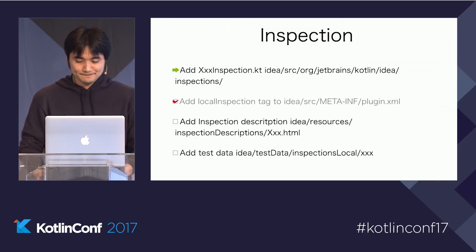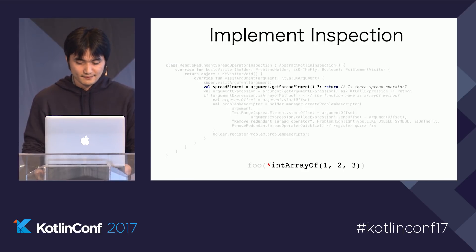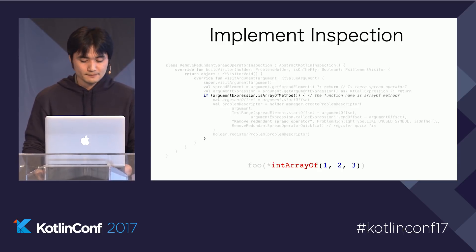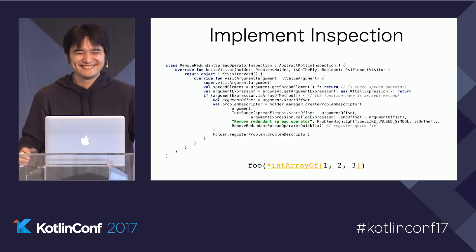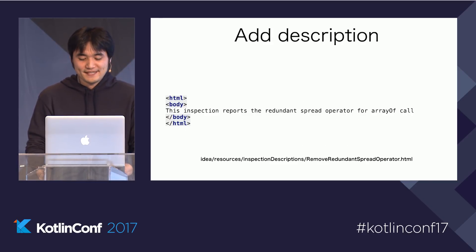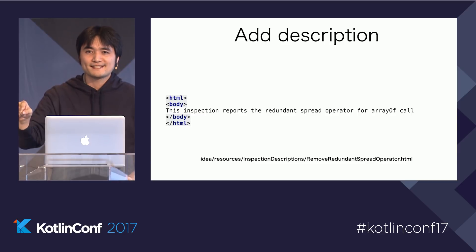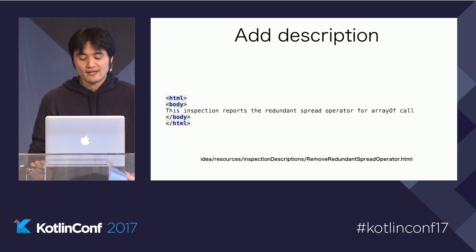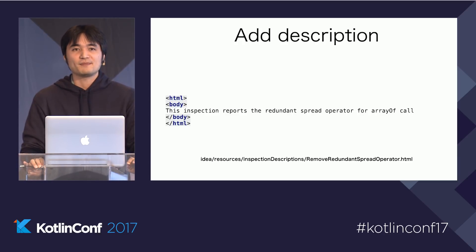Now let's finish up the inspection. Find out if there is an asterisk in the argument. Check if the method call is an intArrayOf method call. Register the quick fix and report it. Next is adding a description file — create an HTML file that explains the inspection. Remember, the inspection's main functionality is reporting, not the quick fix. This was actual code review feedback I received for this inspection.